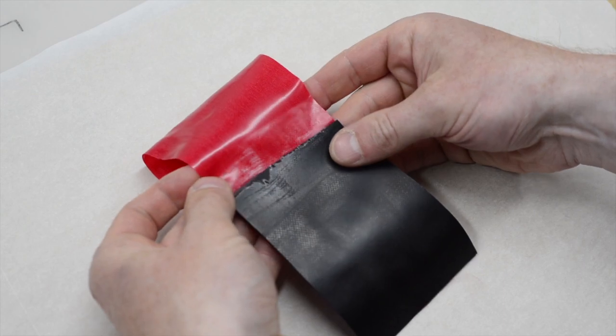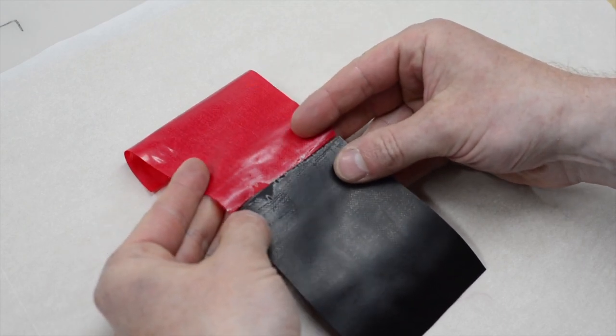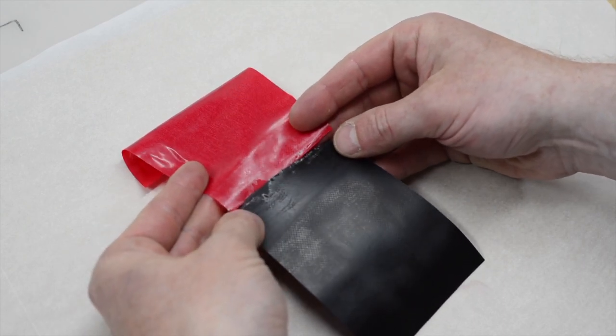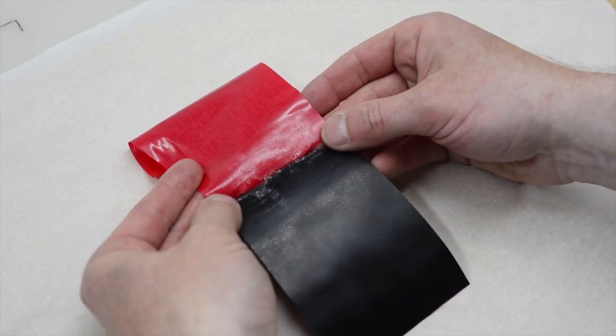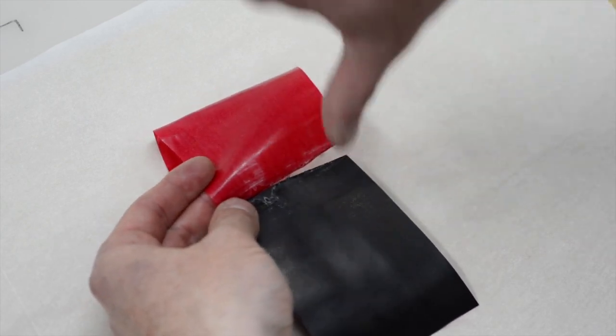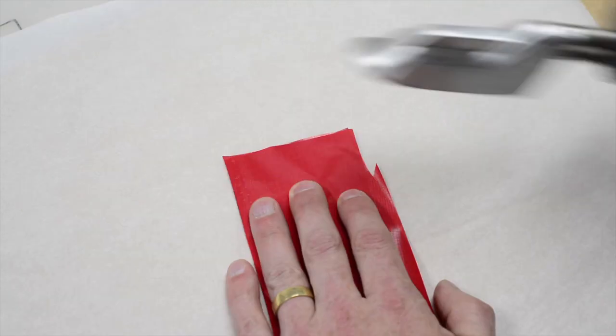None of my irons will get hot enough to be considered too hot so I can't show you what that looks like. But if you start to see the TPU layers liquefying or the woven fabric starts melting, then definitely turn down the temperature.